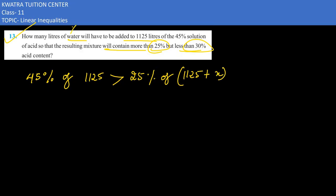Whatever amount of water we add, that would be considered as x. So the total mixture would be 1125 plus x.